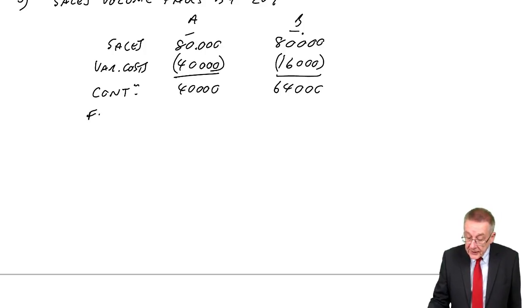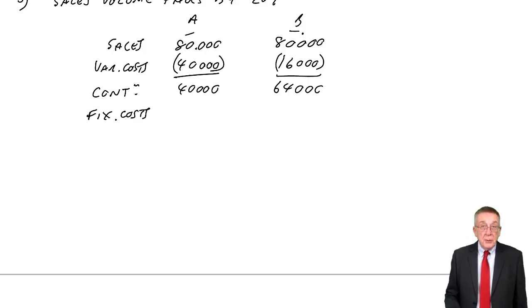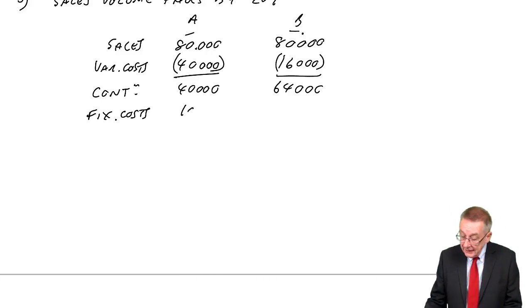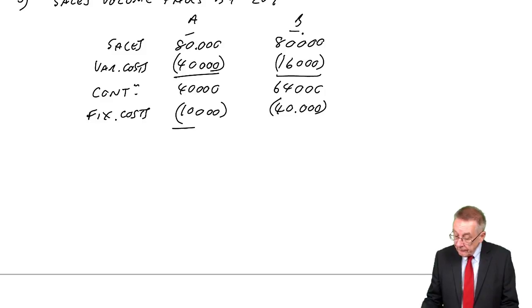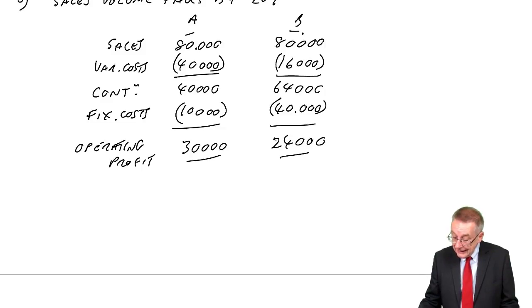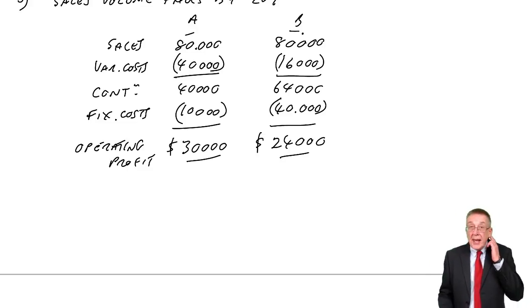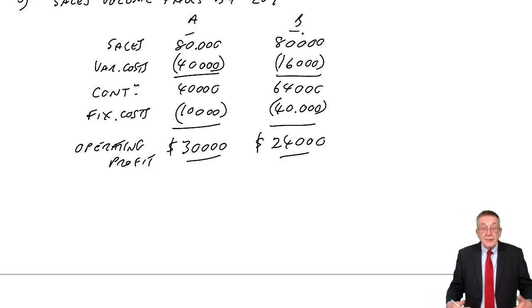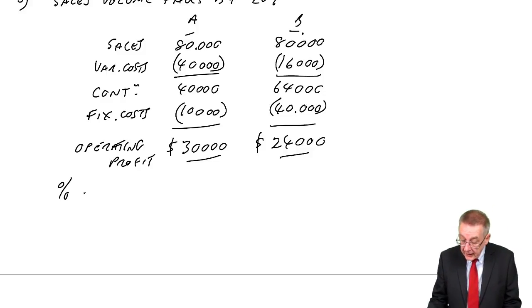But of course, the fixed costs in both cases, by definition, stay the same. A's fixed costs were 10. B's fixed costs were 40. And so the operating profits. A, 30,000. B, 24,000. So in both cases, clearly, if sales volume fell, profits fell.